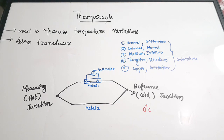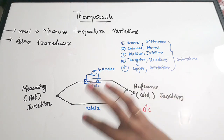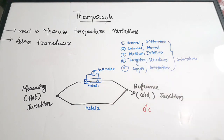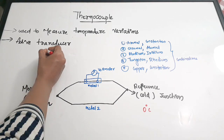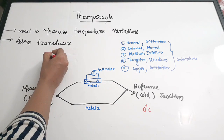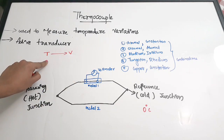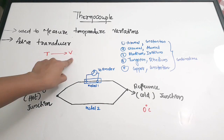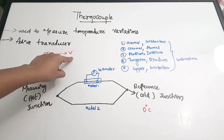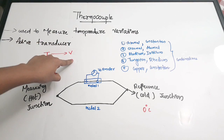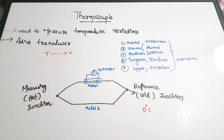What is the function of a transducer? It takes a non-electrical quantity and converts that to an electrical quantity. Here the conversion is from temperature to voltage — it converts the non-electrical quantity temperature and gives the reading in the form of voltage, which is an electrical quantity. That is a transducer.